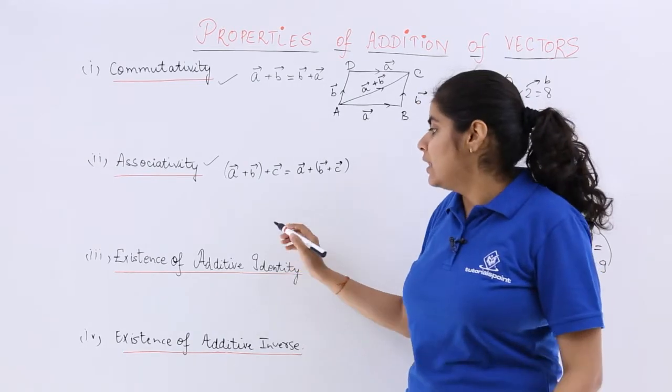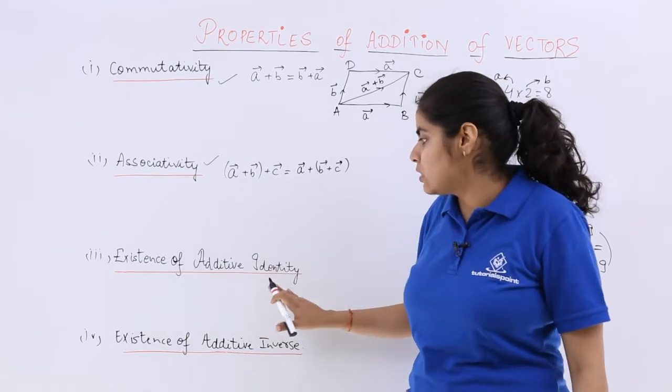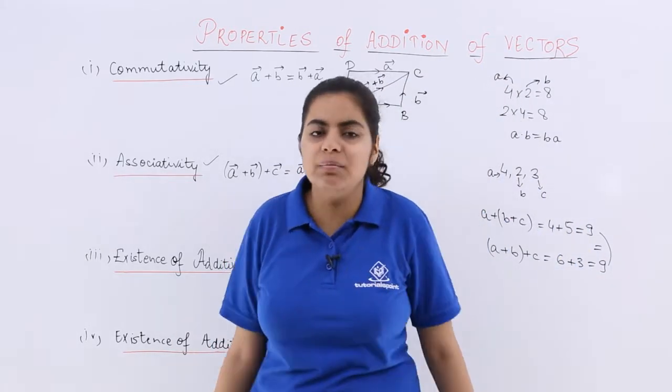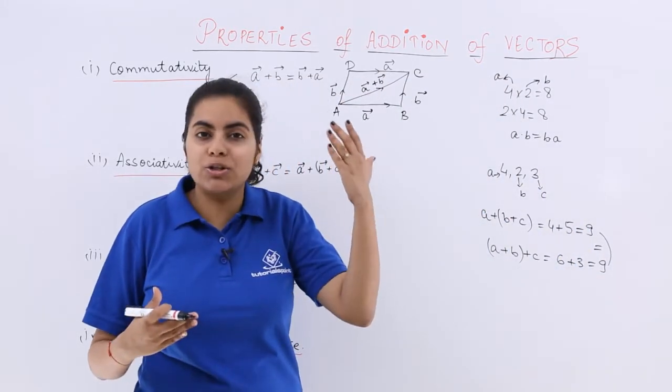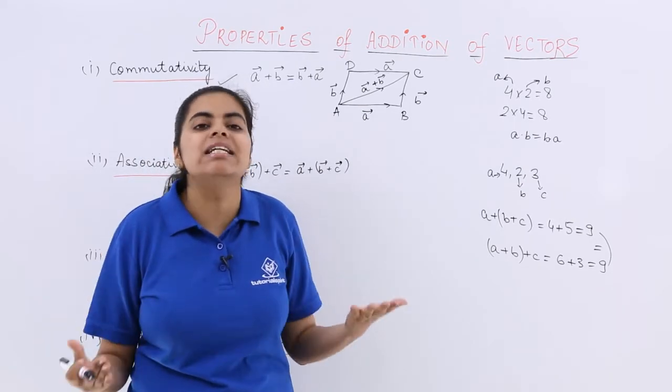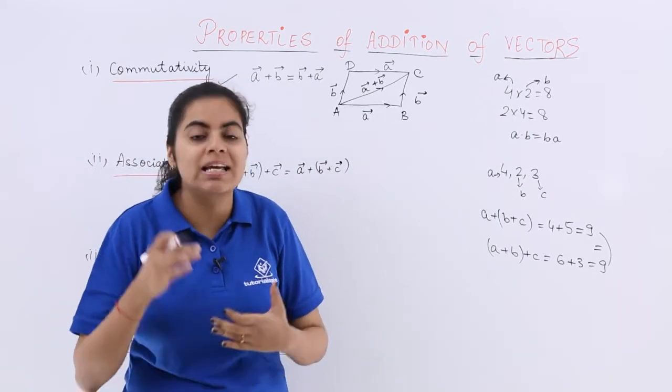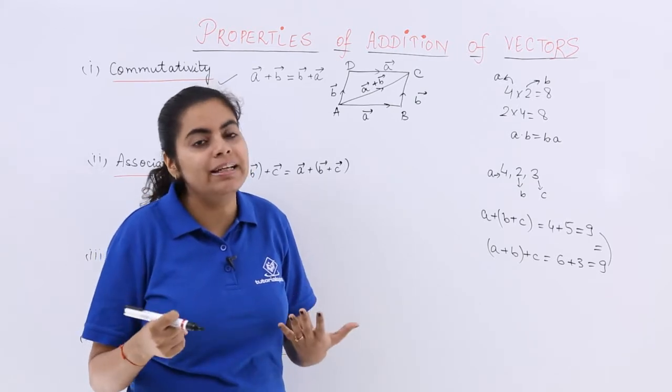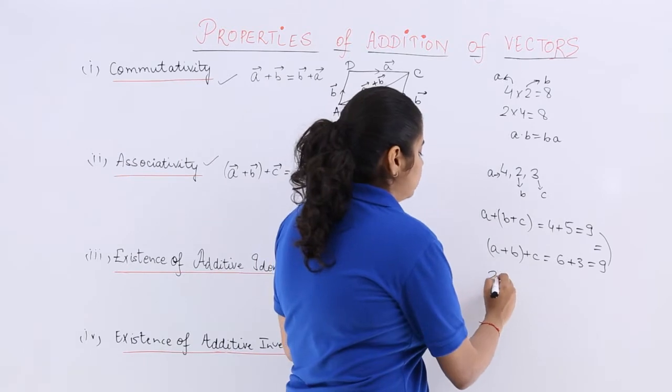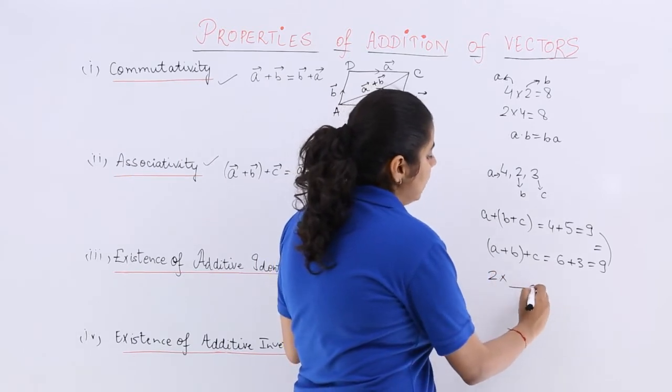The next thing that is important is existence of additive identity. Now what is identity element? If you go back to the concept in relations and functions or if you see it in normal algebra of mathematics, additive identity or identity element is what? Suppose I have a number say 2.